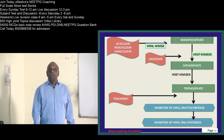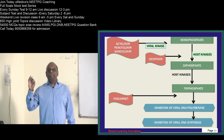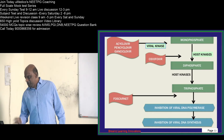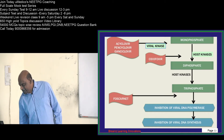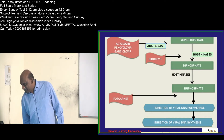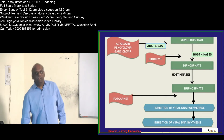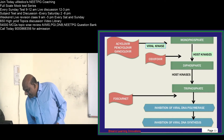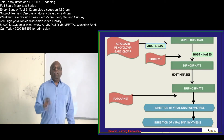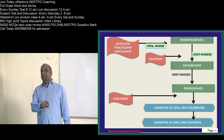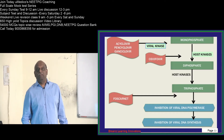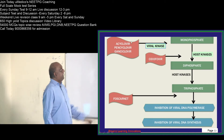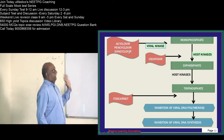Students answer correctly: foscarnet is the antiviral agent of choice in acyclovir-resistant cases. One big clap for those who got it right. To understand why foscarnet works, we need to understand how acyclovir resistance develops.